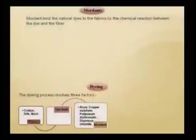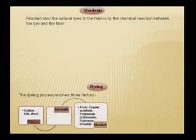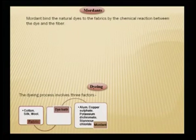Once we understand the dye, we also know that natural dyes need mordanting because they are mordant dyes. A mordant binds the natural dye to the fabric by chemical reaction between the dye and the fiber. Here is a dye, here is a fiber, and the mordant acts as a bridging head. Whether the fiber is cotton, silk or wool, when it is put in the dye bath along with mordants such as alum, copper sulphate, potassium dichromate or stannous chloride, dyeing can be carried out.